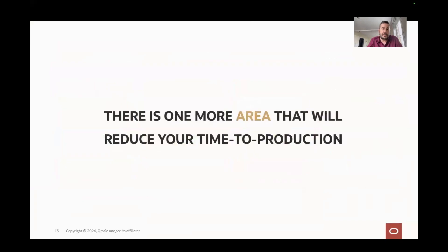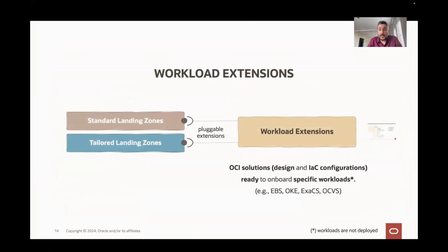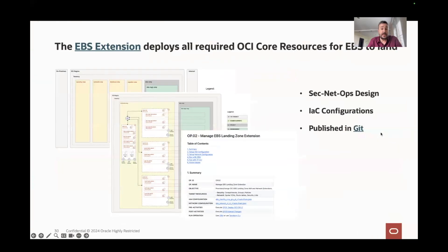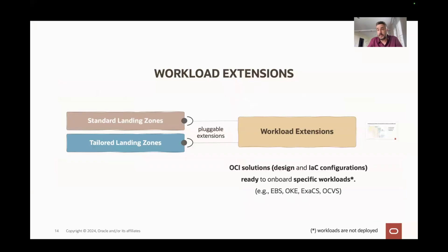There's one more area that can help you reduce your time to production: workload extensions. It's a concept we introduced — self-contained designs and solutions that are pluggable to any landing zone, standard or tailored. They contain all the design and all the infrastructure tools configured and ready to run. They don't deploy the VMs and databases, but all the network, groups, and policies are set up for you. So it's really plug and play. There's the EBS example, public in Git. There's also OKE, ExaCS, OCVS, and more will come.